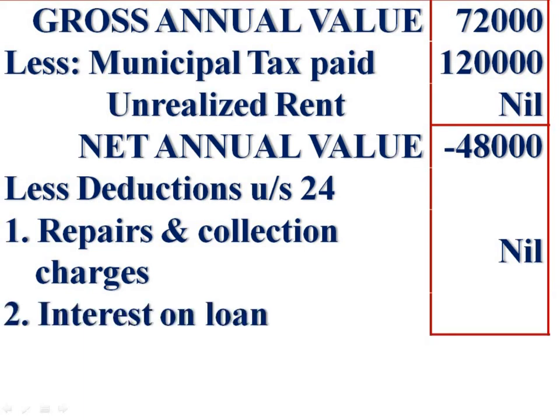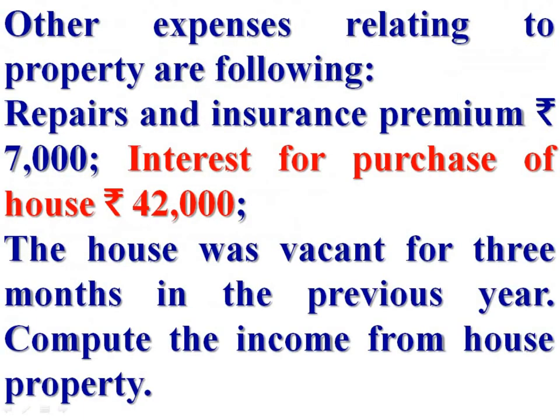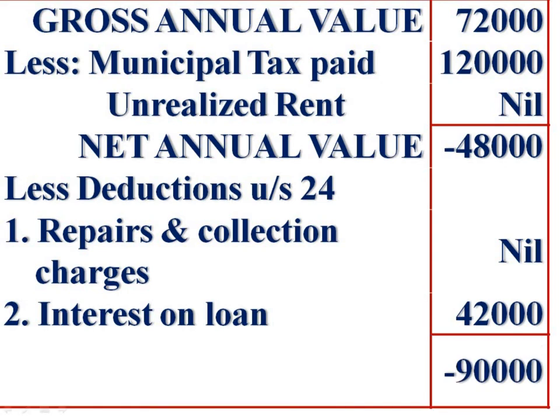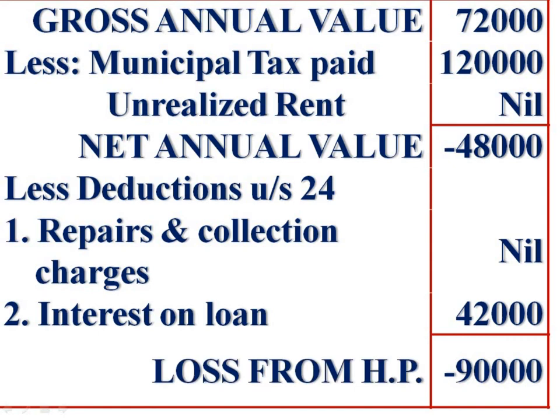The second deduction is in respect of interest on loan. We are given interest on loan for the purchase of the house: Rs 42,000. So, minus Rs 48,000 minus Rs 42,000 gives us minus Rs 90,000. It is a loss from house property.